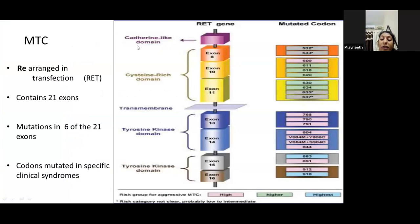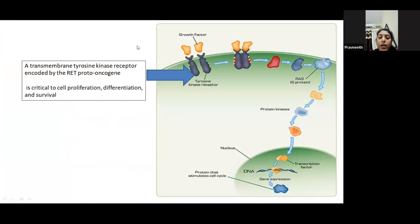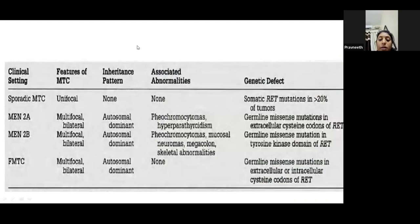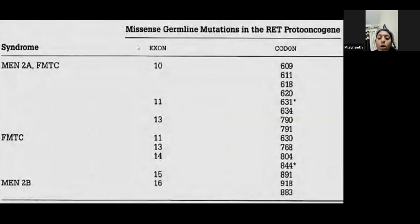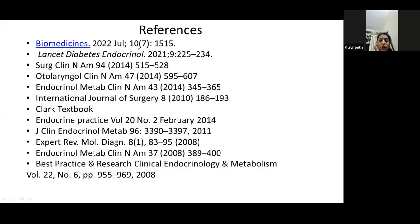In medullary thyroid carcinoma, the common gene involved is RET — rearranged during transfection. RET is a proto-oncogene with 21 exons, each with multiple codons; mutations in specific codons correspond to specific syndromes. RET encodes a membrane tyrosine kinase receptor that enhances receptor proliferation when mutated. In MEN2A, the involved domain is the cysteine codon; in MEN2B, it is the tyrosine kinase domain. The important codons to remember: MEN2B — codon 918; MEN2A — codons 634 and 631.